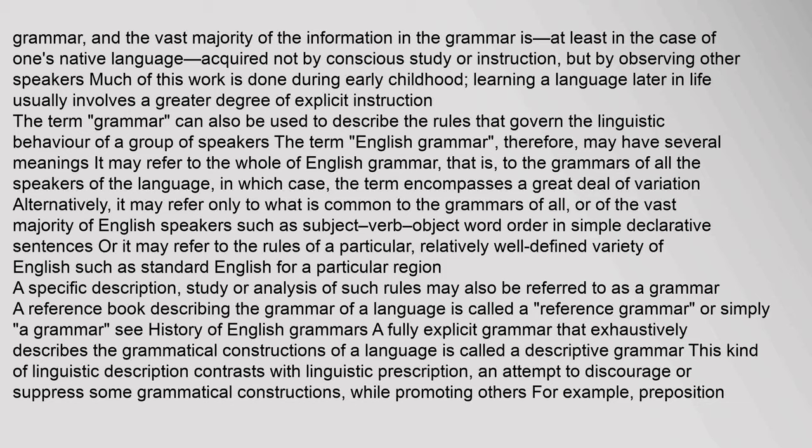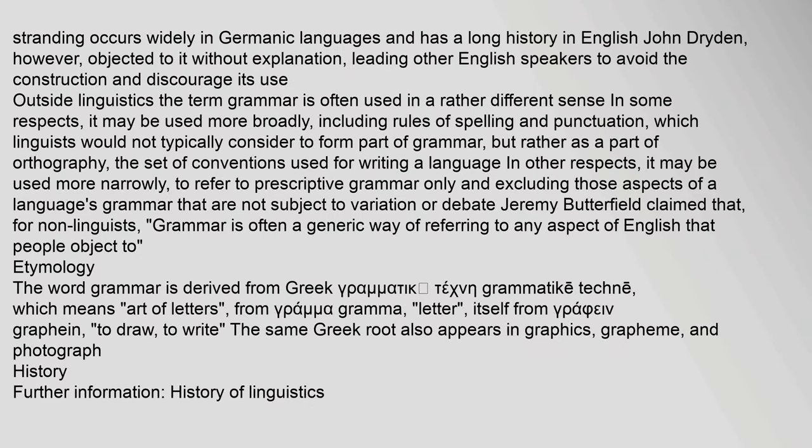Or it may refer to the rules of a particular, relatively well-defined variety of English such as Standard English for a particular region. A specific description, study, or analysis of such rules may also be referred to as a grammar. A reference book describing the grammar of a language is called a reference grammar. A fully explicit grammar that exhaustively describes the grammatical constructions of a language is called a descriptive grammar. This contrasts with linguistic prescription — an attempt to discourage or suppress some grammatical constructions while promoting others. For example, preposition stranding occurs widely in Germanic languages and has a long history in English; John Dryden, however, objected to it without explanation, leading other English speakers to avoid the construction.